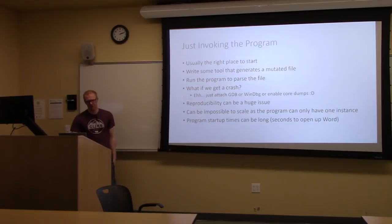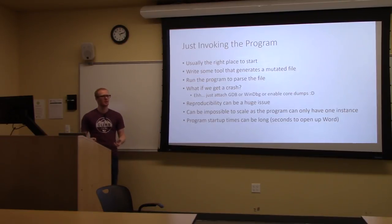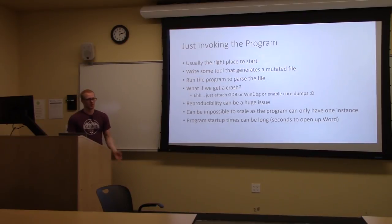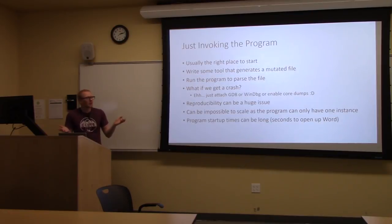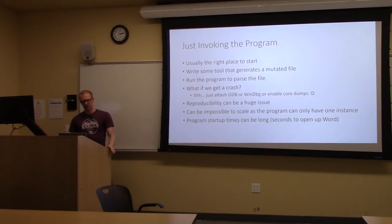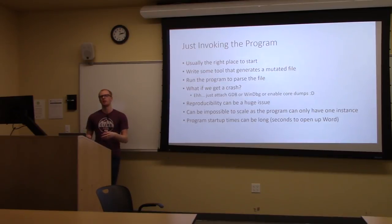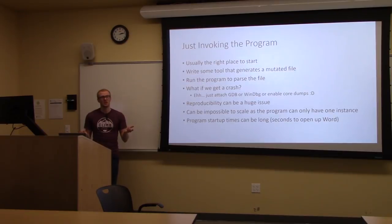The simplest way to fuzz something is literally just running the program. If you want to fuzz an image parser, put an image on disk, double-click it, and you're kind of fuzzing — just do it in a loop and you're actually fuzzing. You need something to create mutated files, and once you're running the application and getting crashes, you're winning. On embedded targets, crashes often just silently reboot with little you can extract.